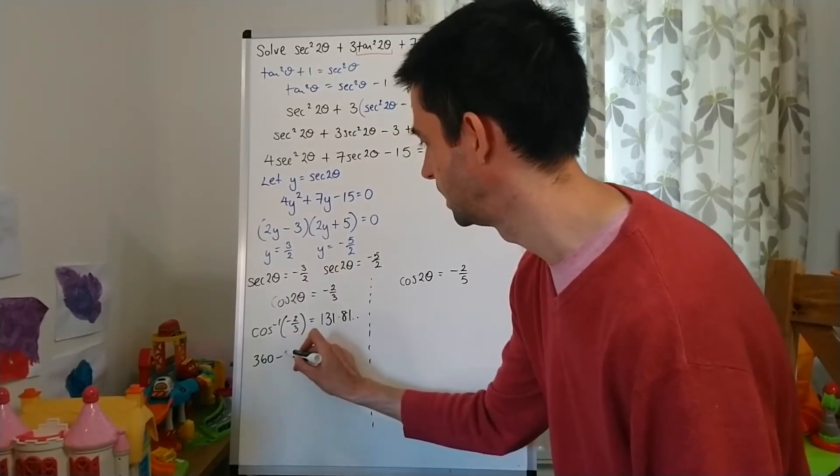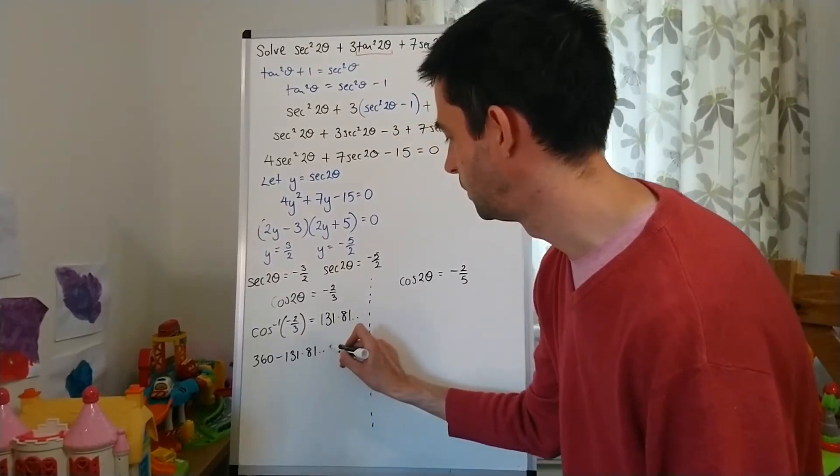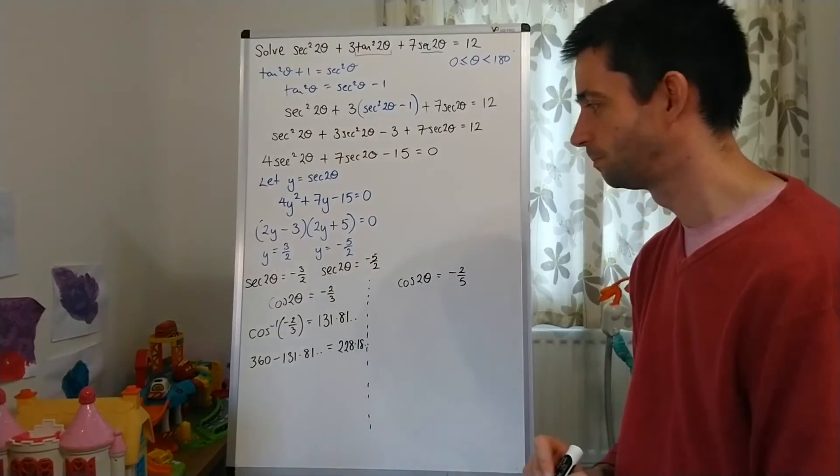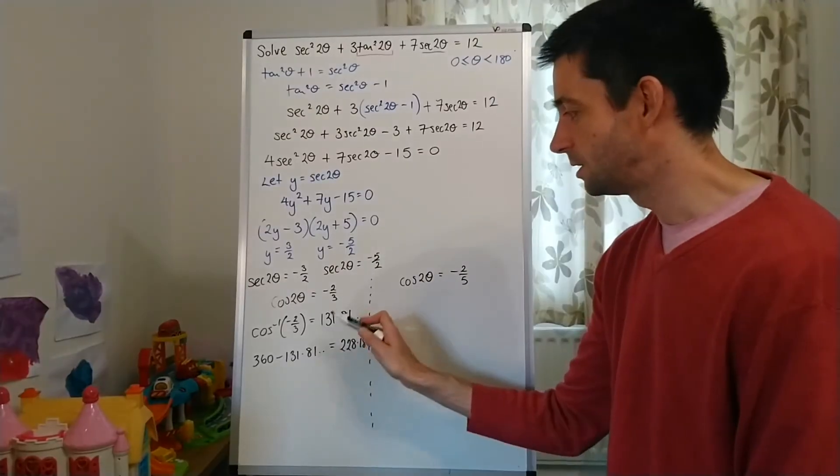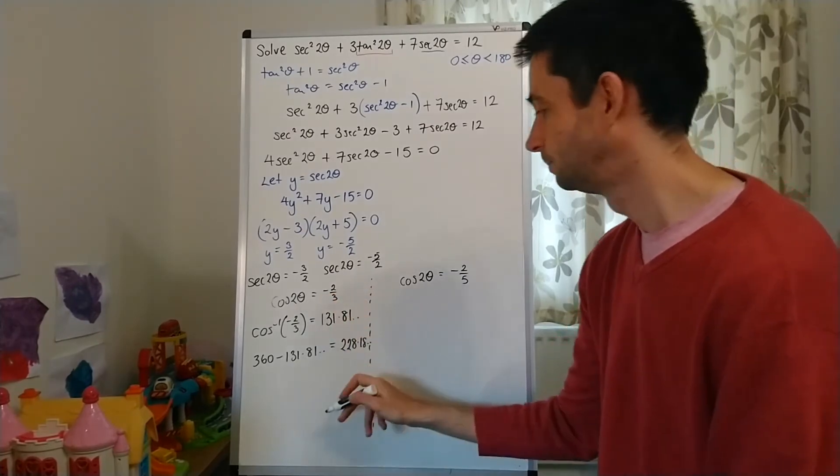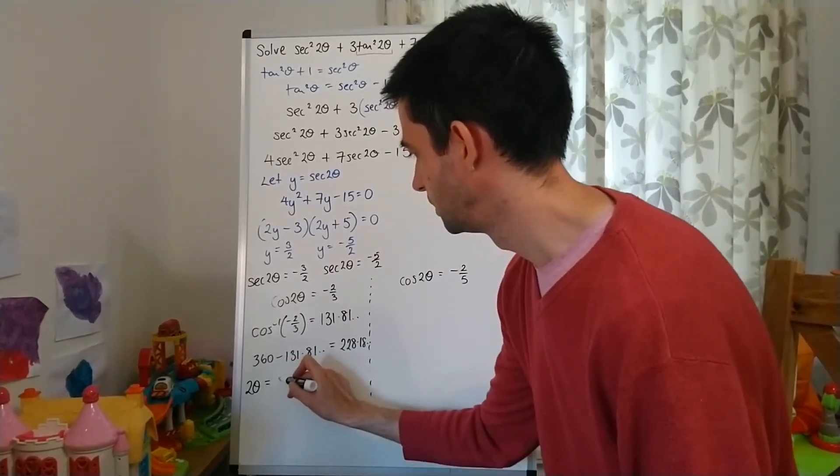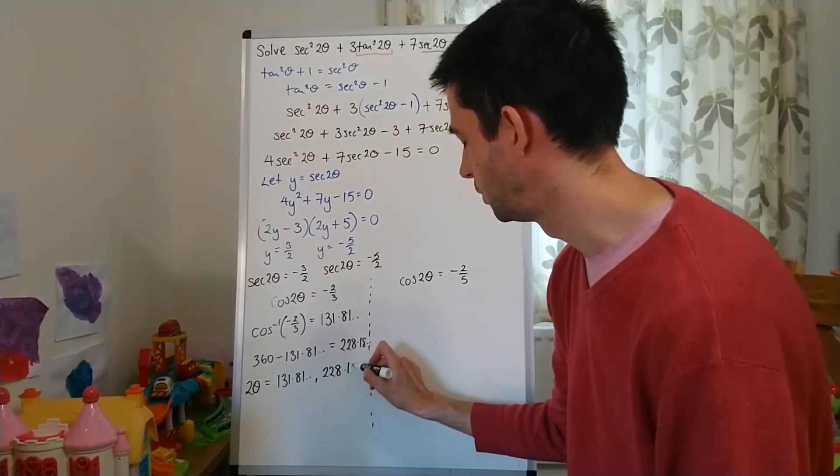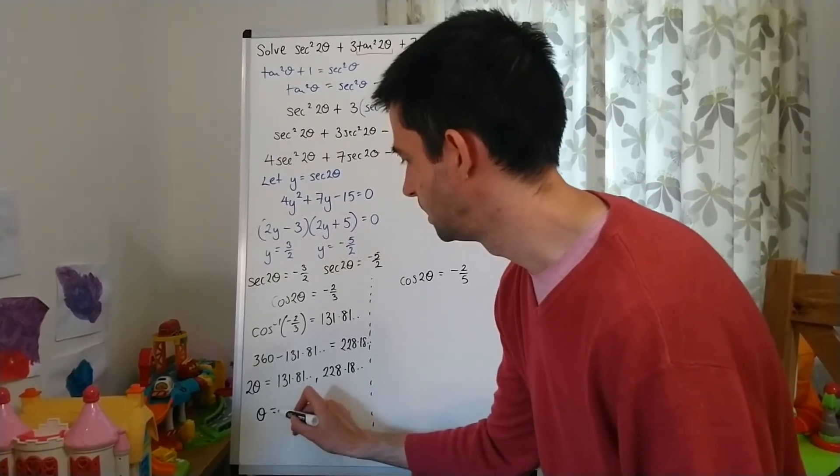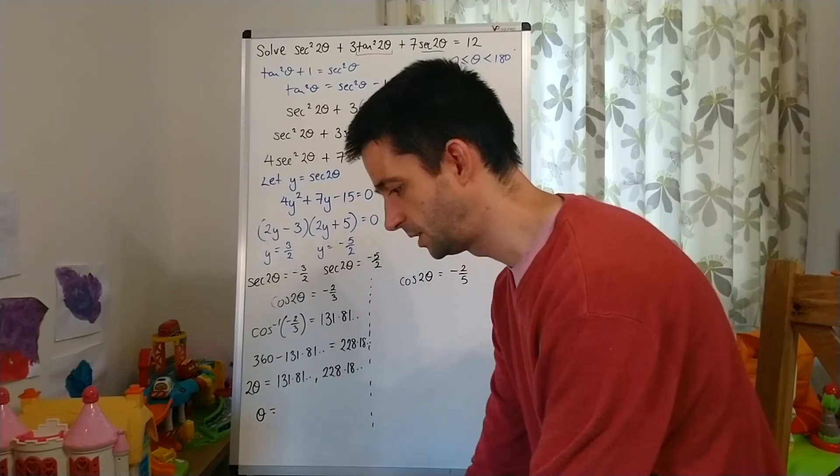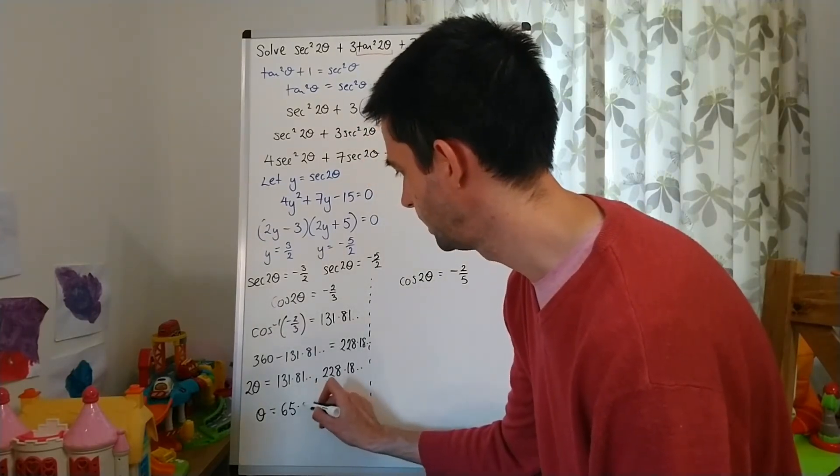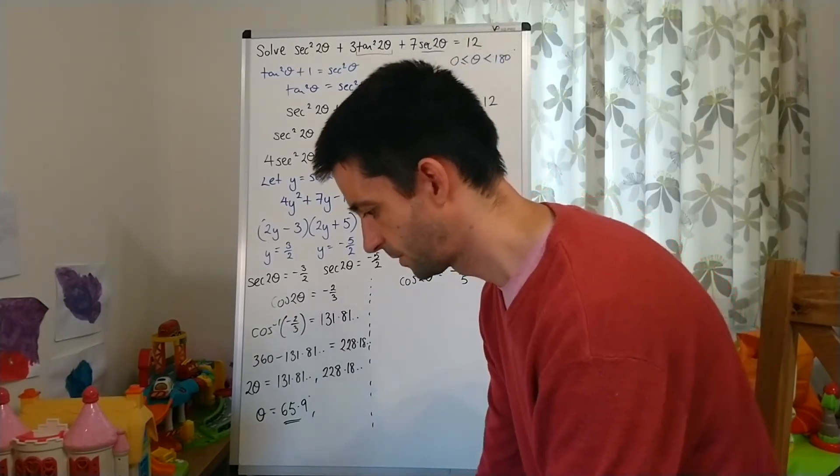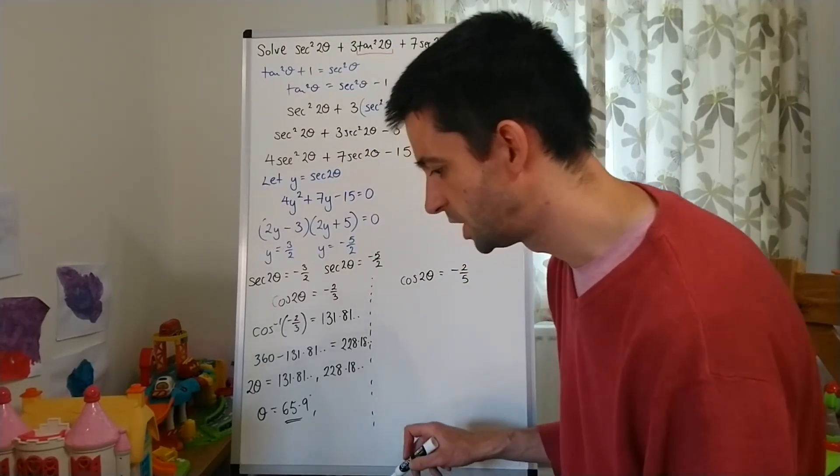So, I'm just going to dive into that one, 360 - 131.81, which is 228.18. Now, importantly, these values aren't θ. They are 2θ. So, 2θ is going to equal 131.81 and 228.18, which means that θ to one decimal place is going to be 65.9 and 114.1.